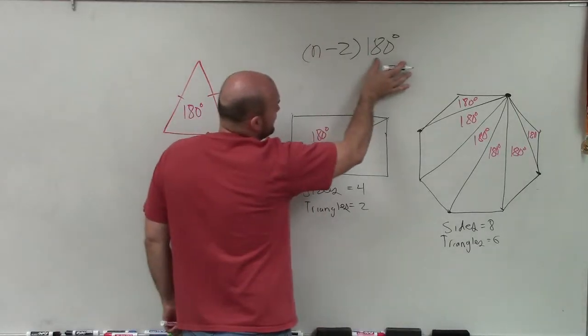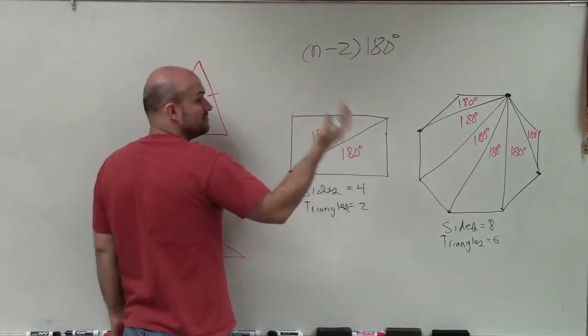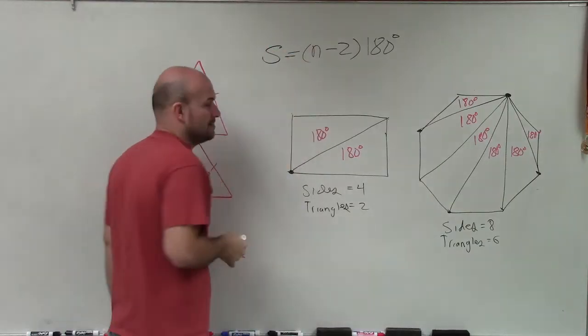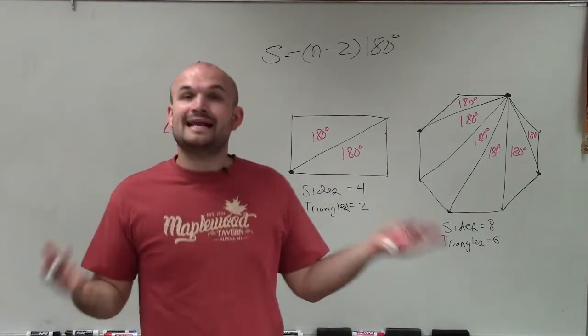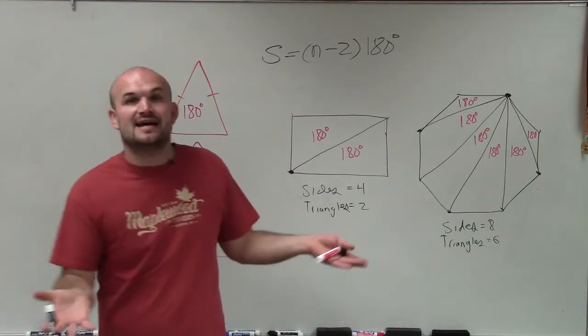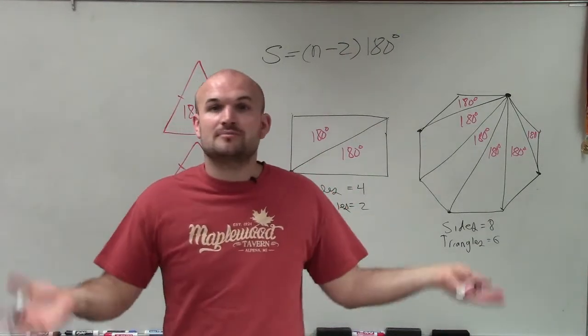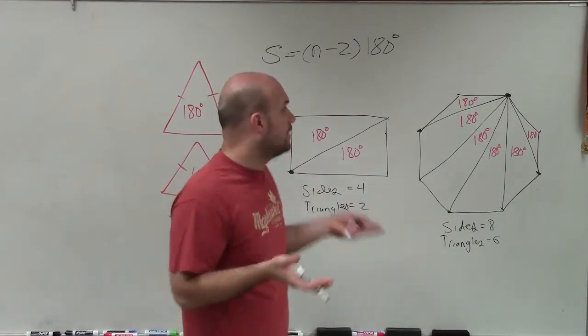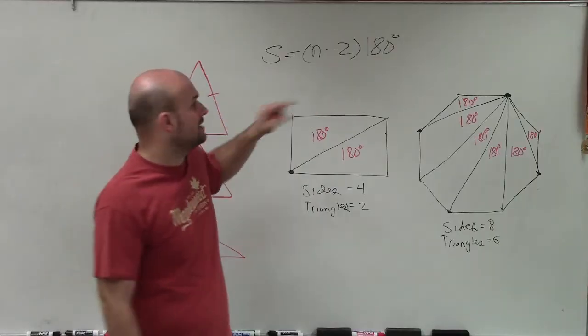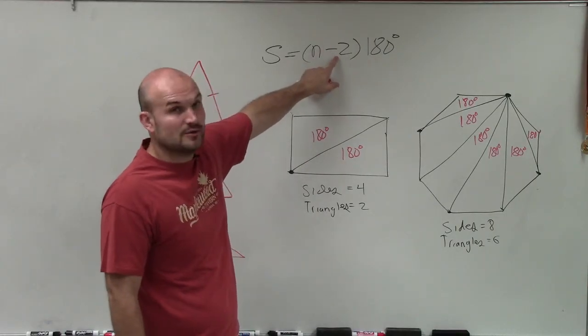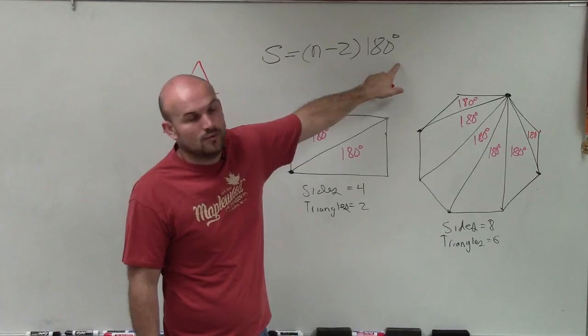So here is going to be the expression that we wrote that is explaining what I just said. And this represents the sum. So if I want to find the sum for any polygon, doesn't matter if it has 5 sides, 10 sides, 11 sides, 250 sides, we can always determine the sum of all the interior angles by taking the number of sides, subtracting it by 2, and then multiplying that by 180.